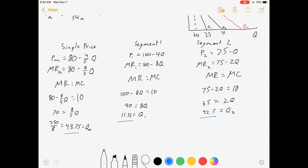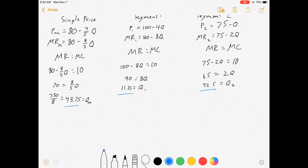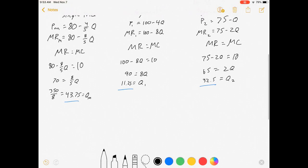So quantities are the same, but the price they're going to charge is going to be different. Now we're going to substitute these quantities into the individual demand curves. Price is equal to 80 minus four-fifths times Q, 43.75, which makes price come out to be 45. That's if we just choose one price.